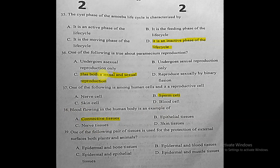Question thirty-nine: one of the following pairs of tissues is used for the protection of the external surface in both plants and animals. The correct answer is epidermal and epithelial tissues, because epidermal tissue protects plants and epithelial tissue protects animals.